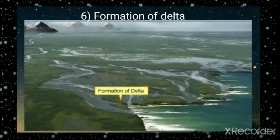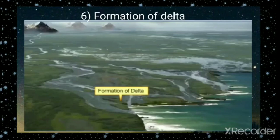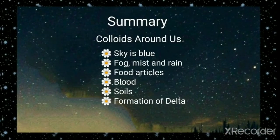Regarding the formation of a delta — river water is a colloidal solution of clay. Sea water contains a number of electrolytes. So when the river water meets the sea water, the electrolytes present in the sea water coagulate the colloidal solution of clay, resulting in its deposition and the formation of a delta.